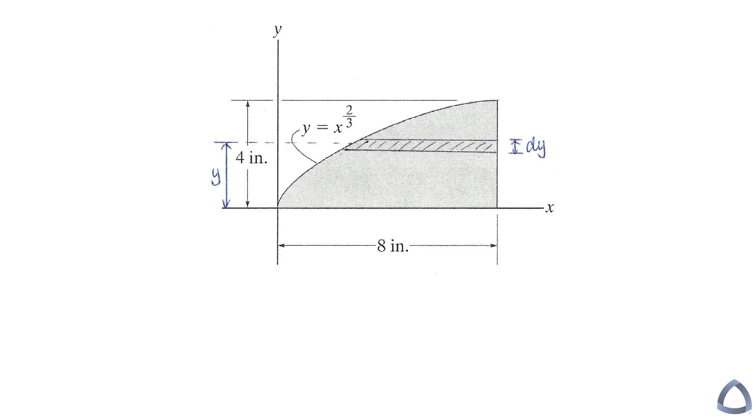For this horizontal little rectangular here, it's still going to be the base times the height. The height is incremental in the y direction, so that's why it's dy. What is the base? Is this base going to be x or it's going to be something else? What you can do, still try to mark the point on the curve.